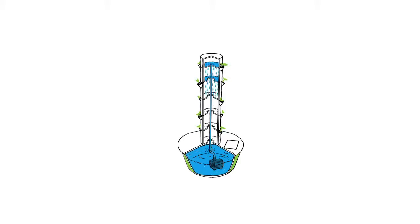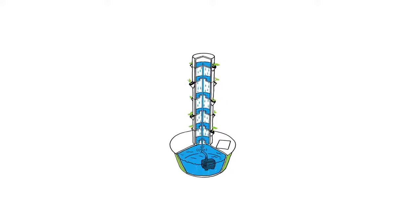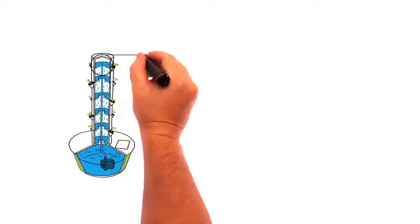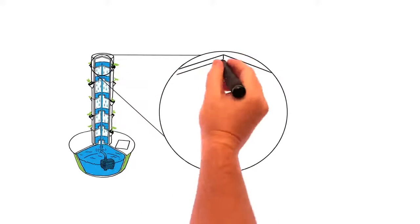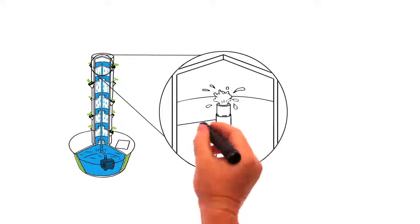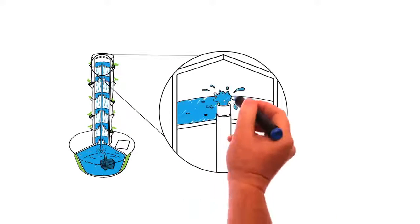From there, the nutrient solution drips through the central tower using a special device that evenly cascades the solution over the exposed plant roots. On the journey down the tower, the nutrient solution feeds the roots and becomes highly oxygenated as it cascades gently down to the reservoir.